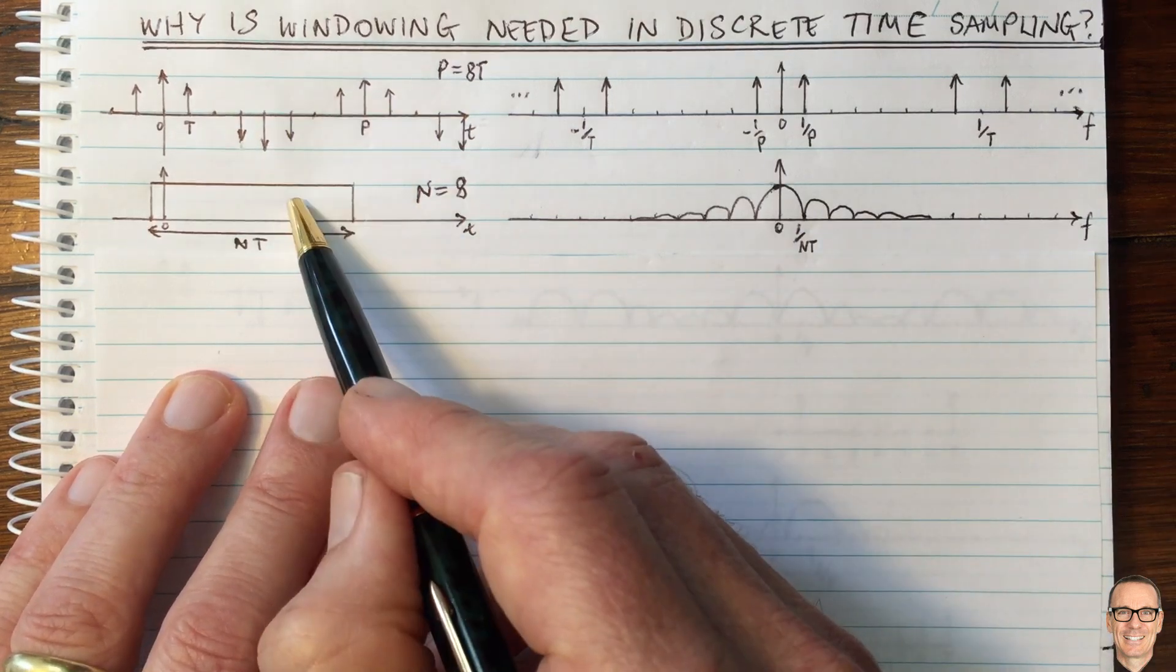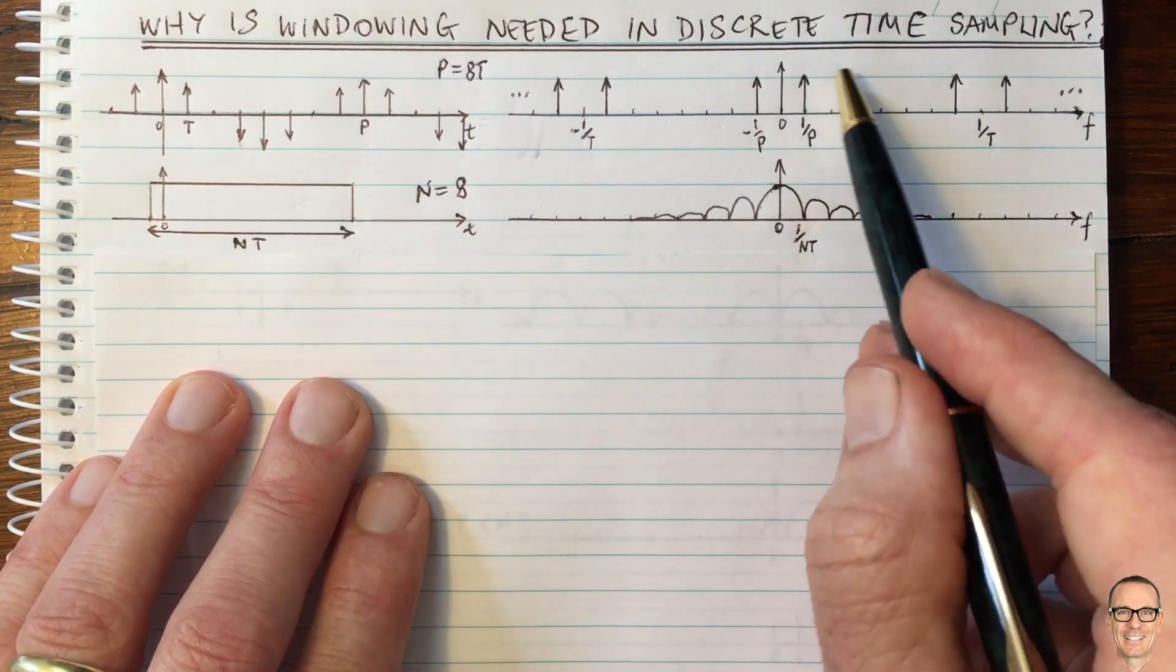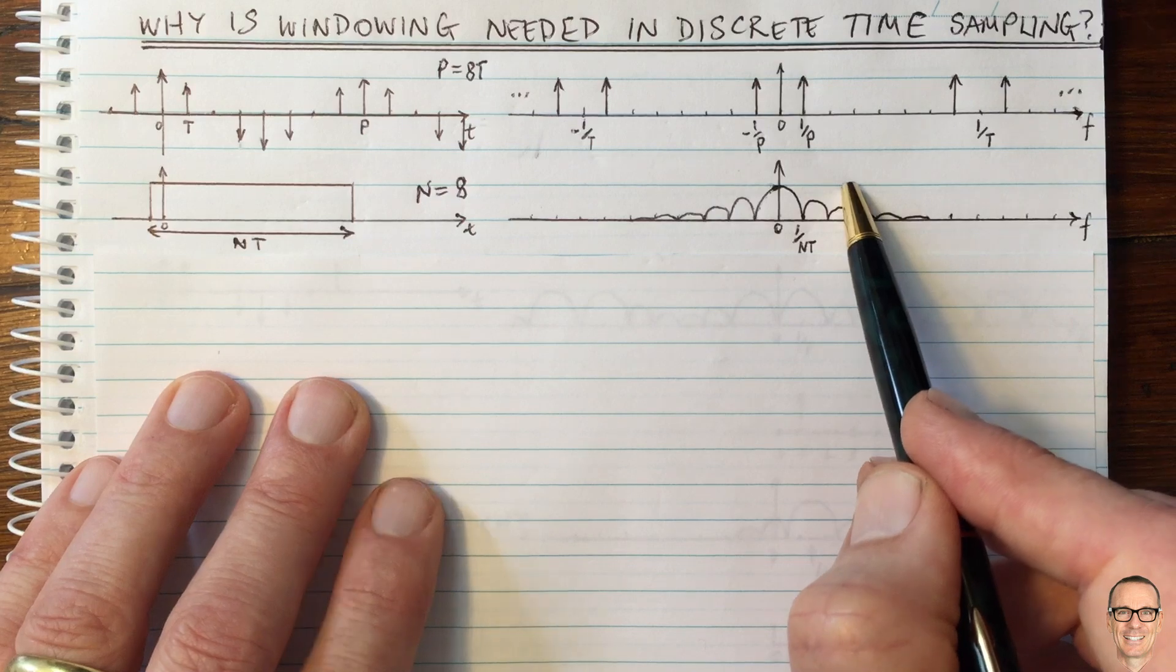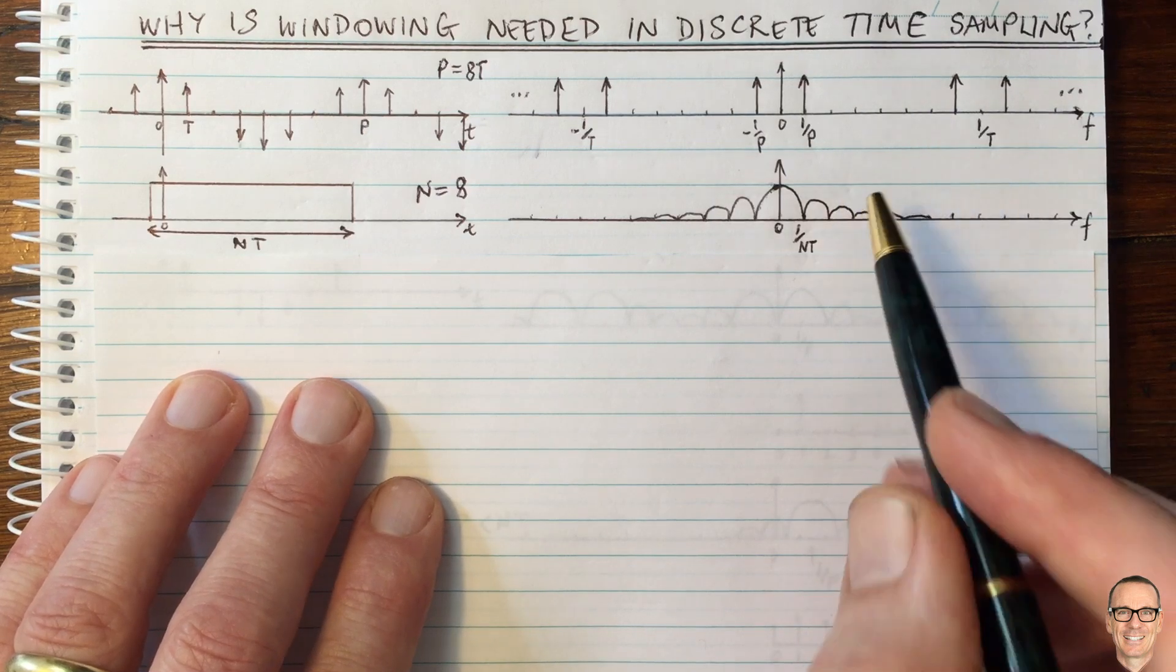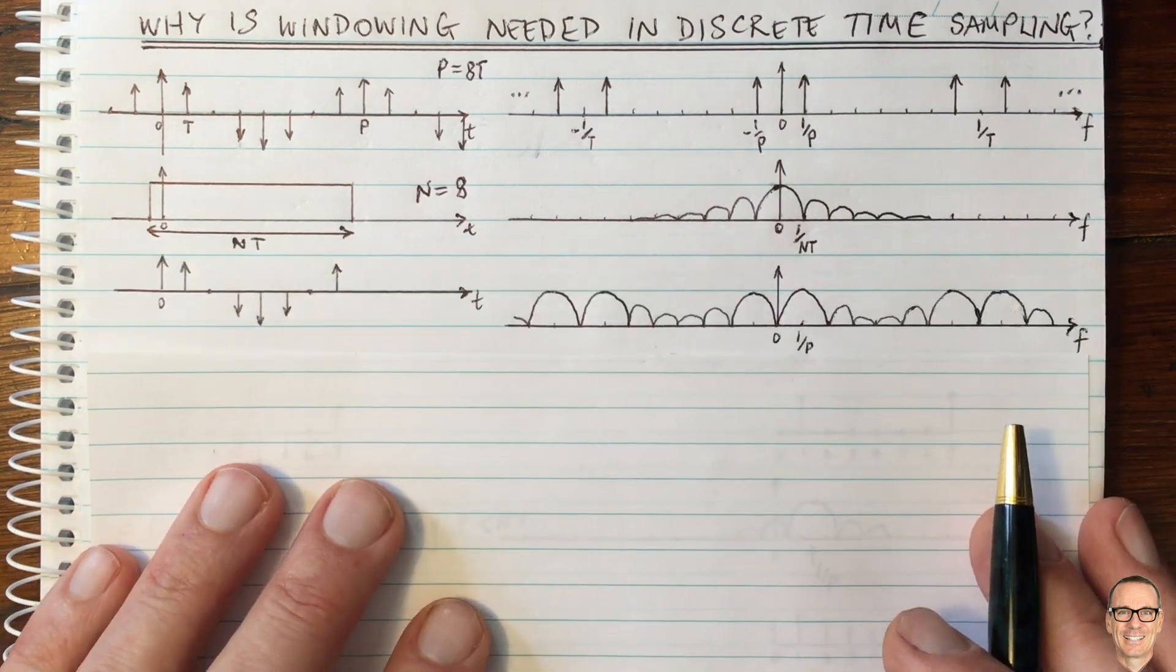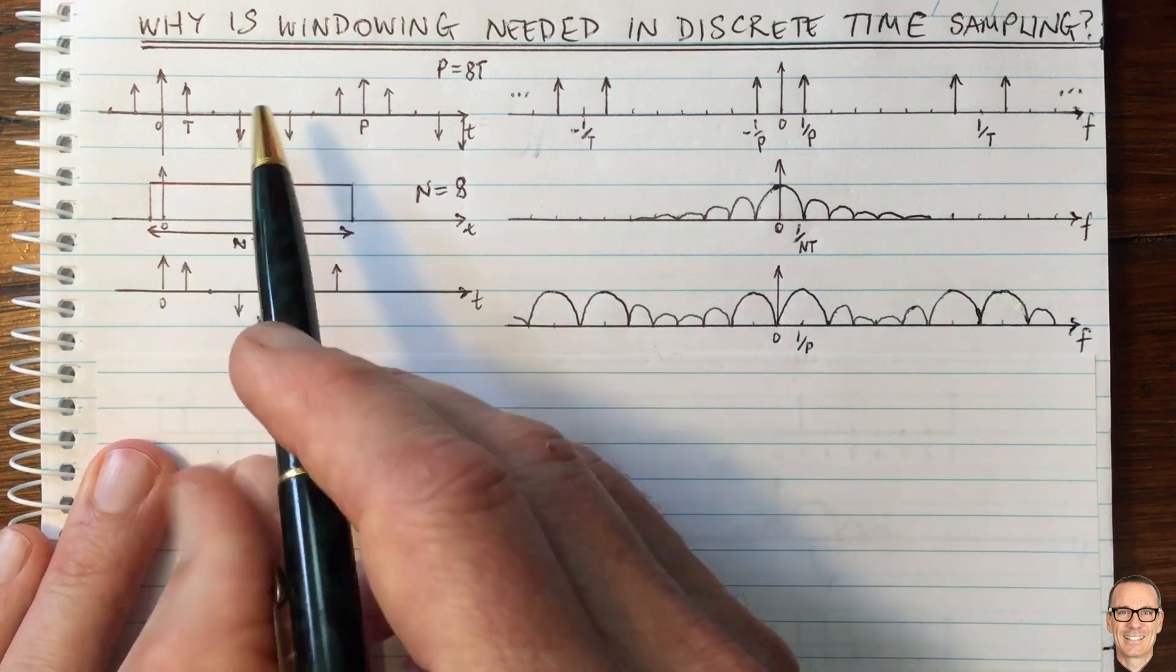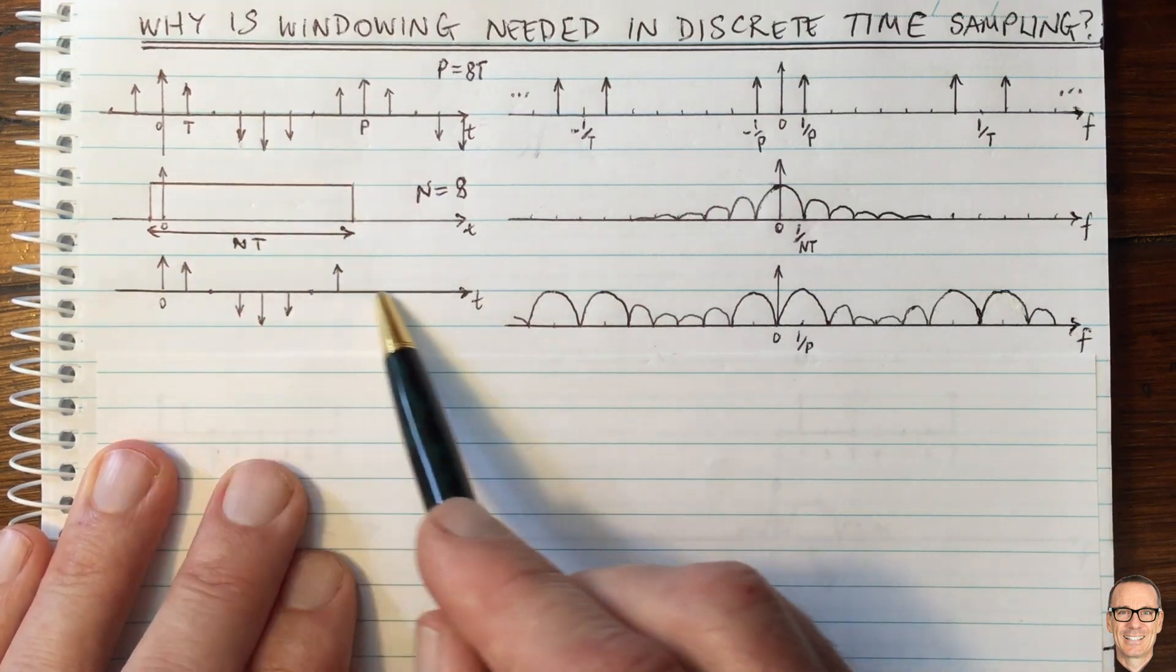Now, because we're multiplying these in the time domain, we're going to be convolving these two in the frequency domain. Check out the show notes for videos that explain that process. So here we've multiplied these two together to get this function,